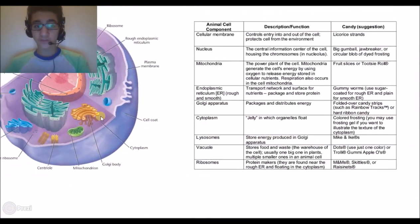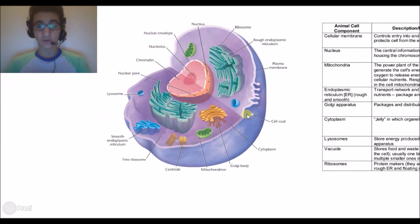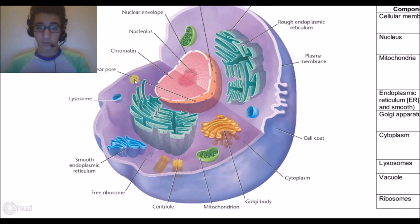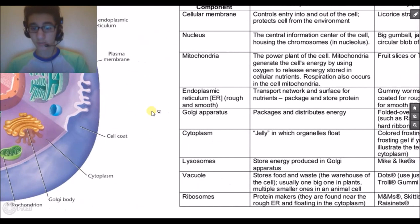The cytoplasm, which all these organelles float in, is where the organelles flow. This purple thing is the cytoplasm.